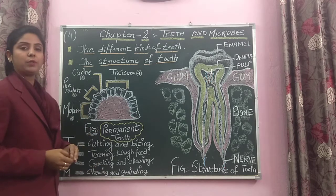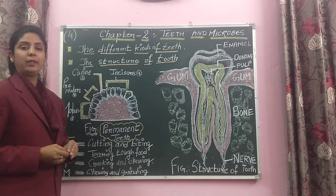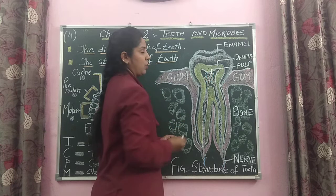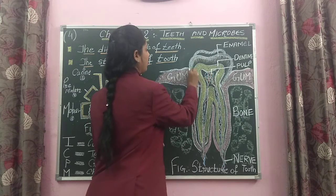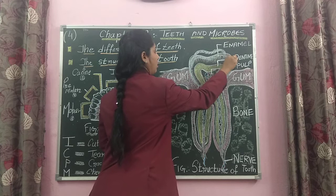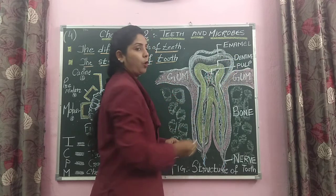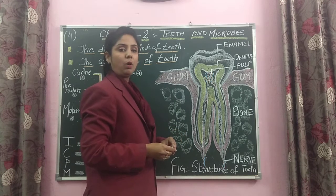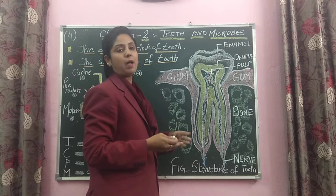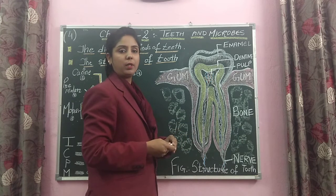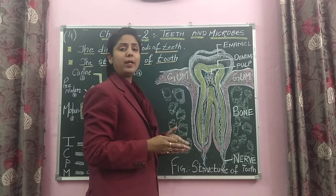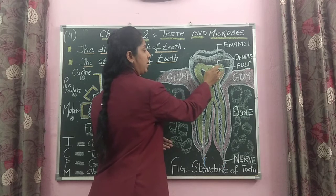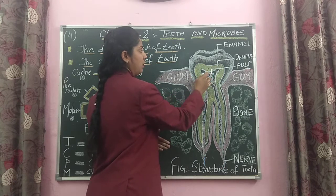Now I will explain the structure of a tooth. Here you can see the structure of a tooth. What I am drawing is the outer layer of the tooth. The outer covering is called enamel. Enamel is the hardest substance in our body — if it is worn out, it cannot be naturally repaired. Under the enamel, we can see dentine — the yellow area marked here is dentine.